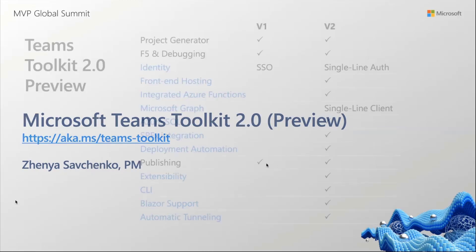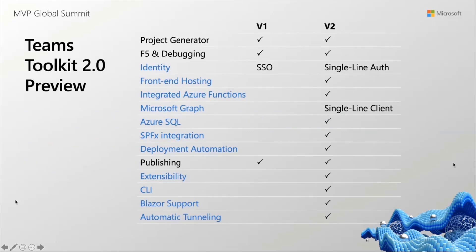Focusing on Teams toolkit, some of the things we've done since the previous version we released last year: we have added essentially a big simplification to your authentication setup. We've done that by collecting together some of the lifecycle stages of an application into one set of commands in the toolchain. You now get access to hosting for your custom tabs, your bots, and your Azure functions. We've integrated Azure functions into the default template.